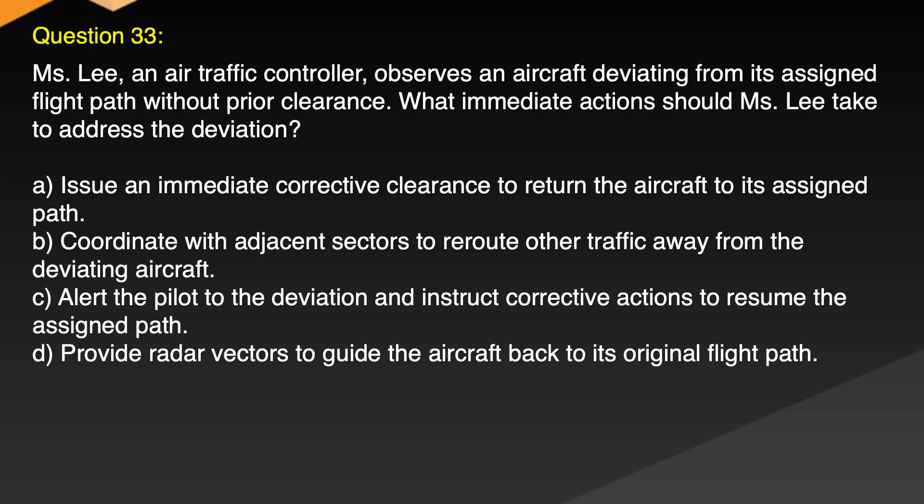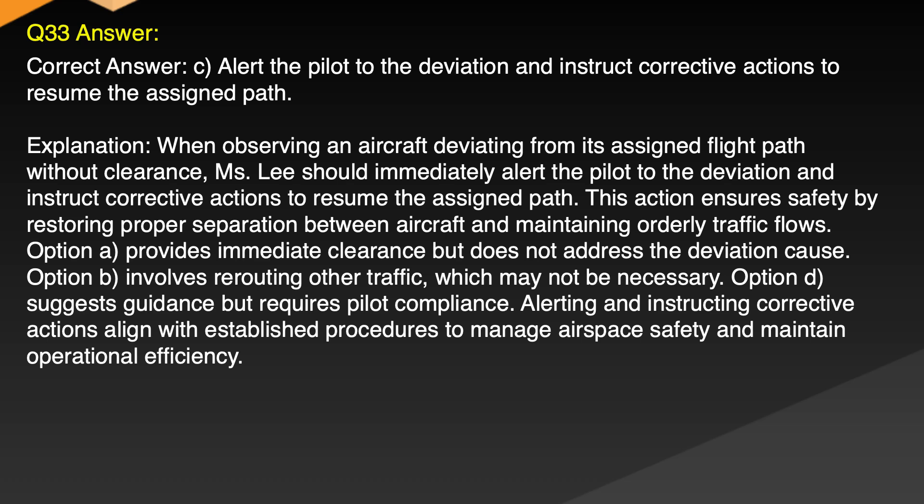Question 33. Ms. Lee, an air traffic controller, observes an aircraft deviating from its assigned flight path without prior clearance. What immediate actions should Ms. Lee take to address the deviation? A. Issue an immediate corrective clearance to return the aircraft to its assigned path. B. Coordinate with adjacent sectors to route other traffic away from the deviating aircraft. C. Alert the pilot to the deviation and instruct corrective actions to resume the assigned path. D. Provide radar vectors to guide the aircraft back to its original flight path. Correct answer: C. Alert the pilot to the deviation and instruct corrective actions to resume the assigned path.